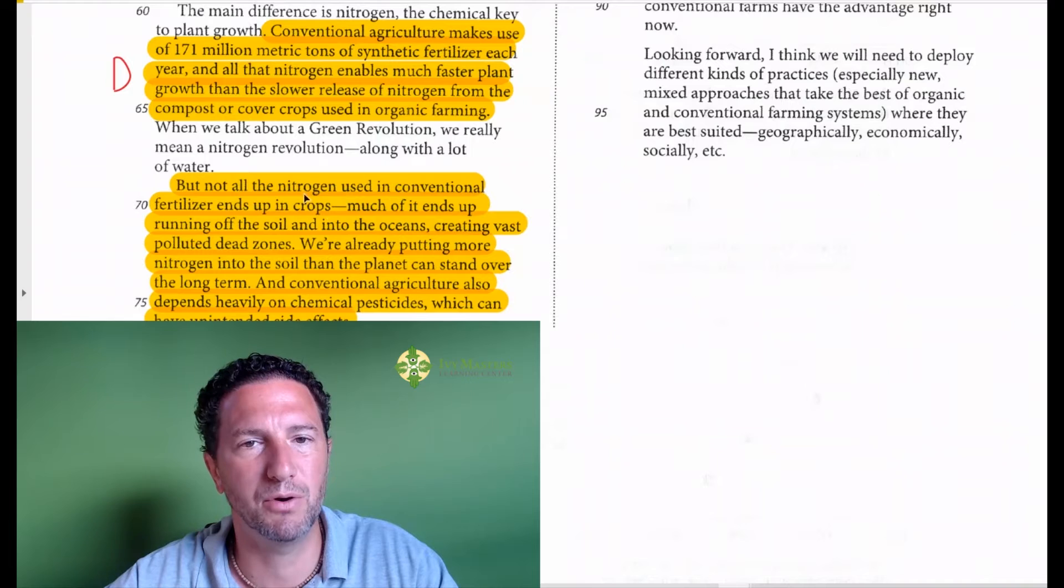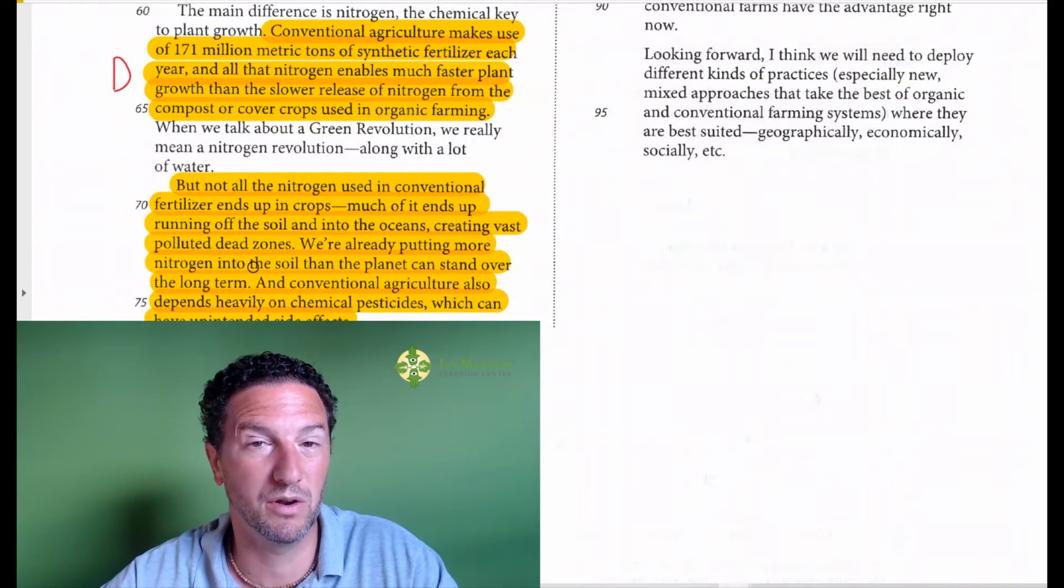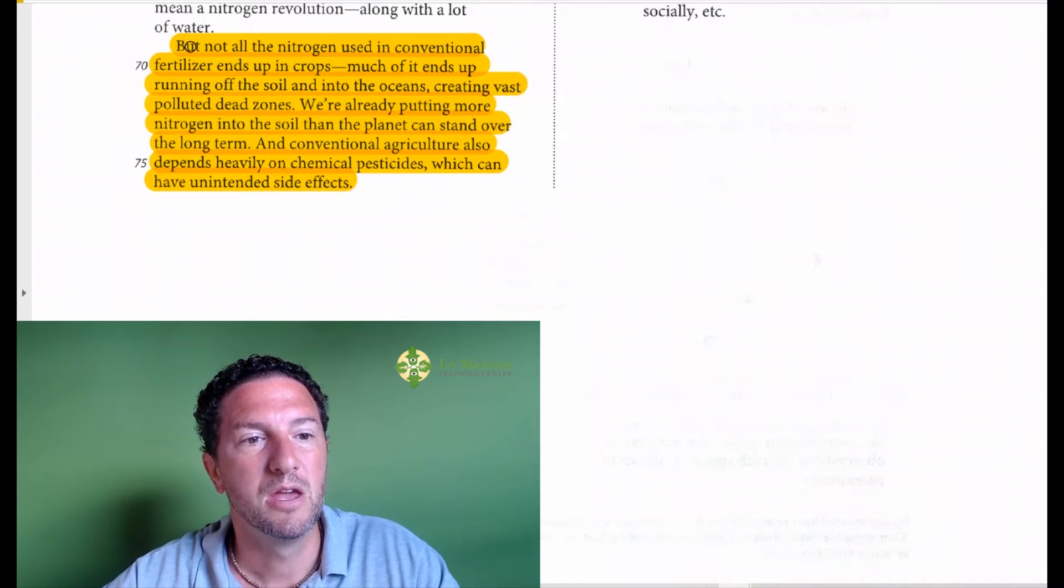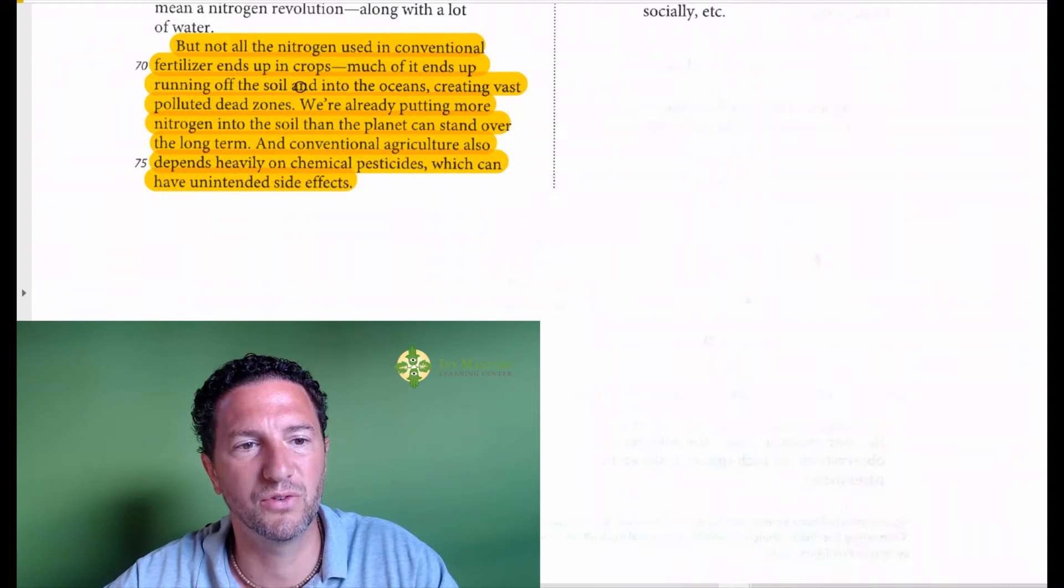And I know that this last part is not a line of reference, but it is important to eliminate one of the wrong answers. So we read it: but not all nitrogen use in conventional fertilizer ends up in crops. Much of it ends up running off the soil and into the oceans, creating vast polluted dead zones, while already putting more nitrogen into the soil than the planet can stand over the long term. A conventional agriculture also depends heavily on chemical pesticides, which can have unintended side effects.